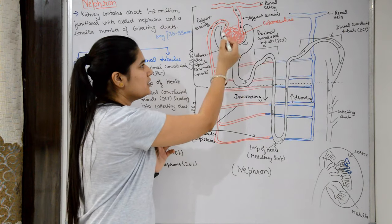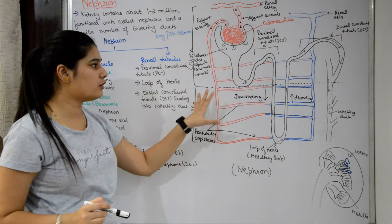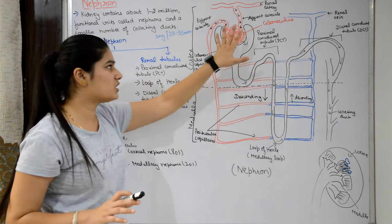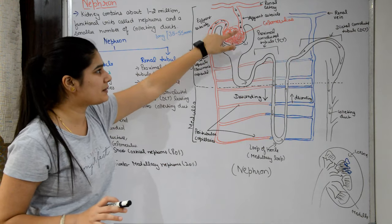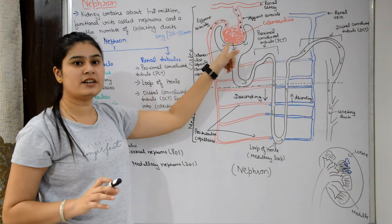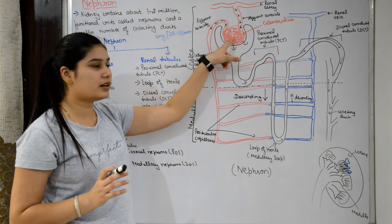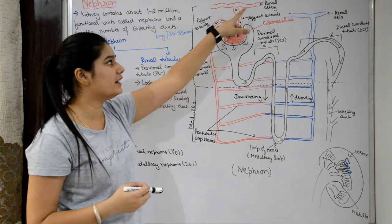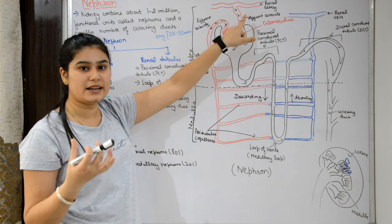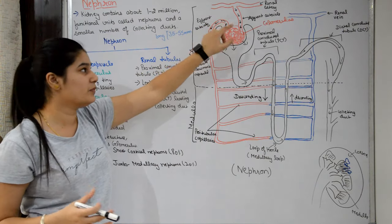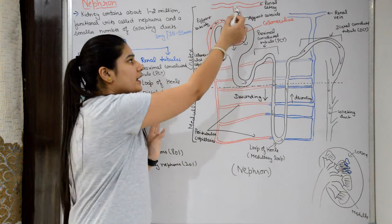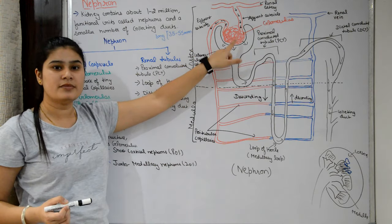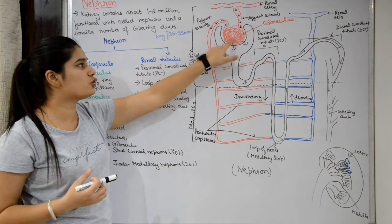The glomerulus is the starting point of the nephron. Our nephron has two ends — one closed end which is the starting point, and the other end which connects to the collecting duct. Blood is supplied to the nephron through the renal artery, which branches into afferent arterioles. The afferent arterioles carry blood into the nephron and form a network of capillaries called the glomerulus.